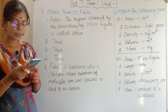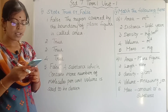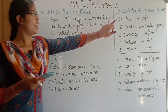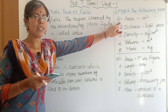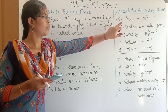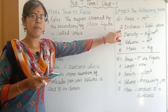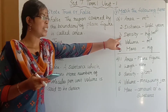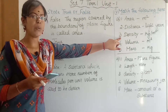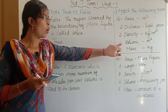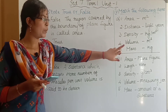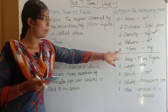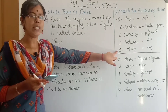Fourth section, match the following — Part A: Area: SI unit is metre square. Distance: light year is the unit of distance. Density: SI unit is kilogram per metre cube. Volume: SI unit is metre cube. Mass: SI unit is kilogram.